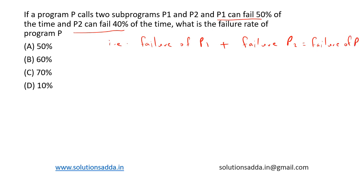Now, we can say that when both P1 and P2 fails at the same time, failure of P1 intersection failure of P2, this is already counted twice.